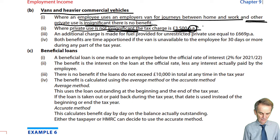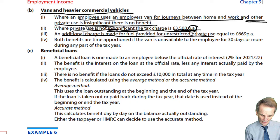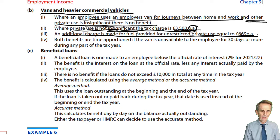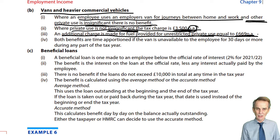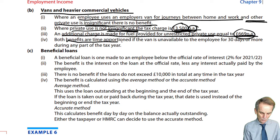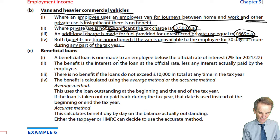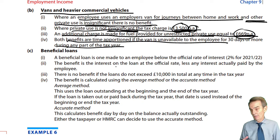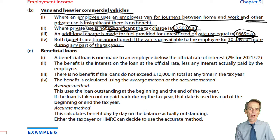The van benefit covers provision of the vehicle itself. An additional charge applies for fuel provided for unrestricted private use — £669 per annum. Both the £3,500 and the £669 are on your rates and allowances page. Both benefits are time-apportioned if the van was unavailable during any part of the tax year, including where it was unavailable for 30 days or more.